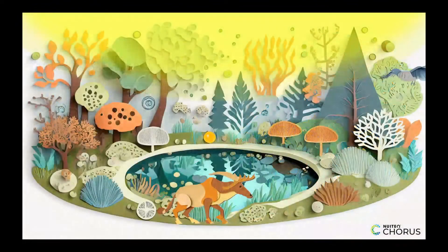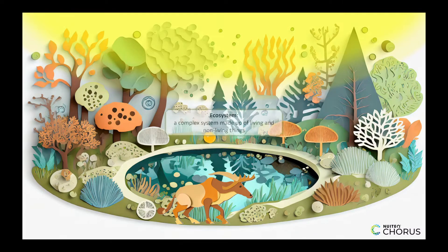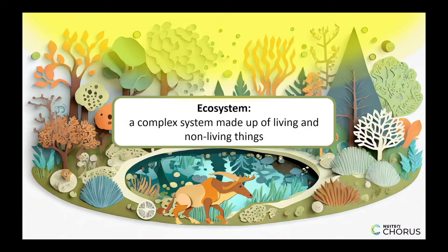Welcome to our lesson on the Cycling of Matter and Flow of Energy in an Ecosystem. An ecosystem is a complex system made up of living and non-living things. It could be a pond, a forest, or even your own backyard.